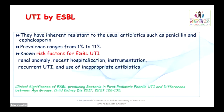Nowadays, what we commonly see in clinical practice is UTI caused by ESBL-producing organisms, which have inherent resistance to usual antibiotics such as penicillin and cephalosporins. Papers have shown prevalence ranging from 1% to 11%. Known risk factors for ESBL UTI include: children with renal anomaly, recent hospitalization, instrumentation, recurrent urinary tract infection, and use of inappropriate antibiotics. Renal anomalies include PUJ obstruction, posterior urethral valve, neurogenic bladder, and vesico-ureteric reflux.